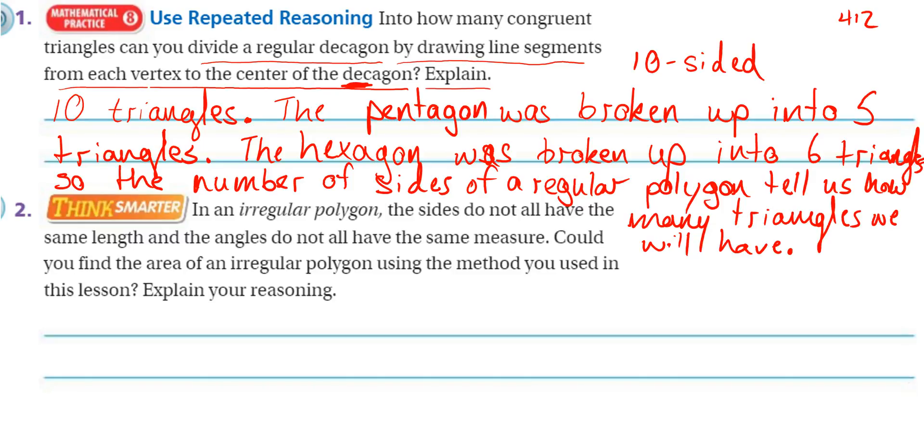All right, think smarter. Remember, in an irregular polygon, the sides do not all have the same length, and the angles do not all have the same measure. Could you find the area of an irregular polygon using the method you use in this lesson? Explain your reasoning.